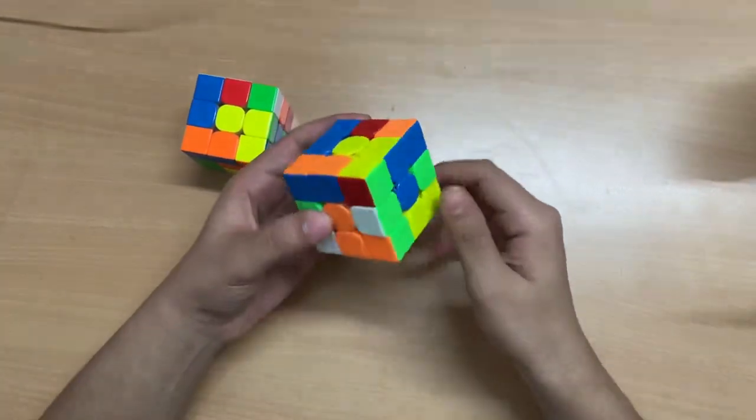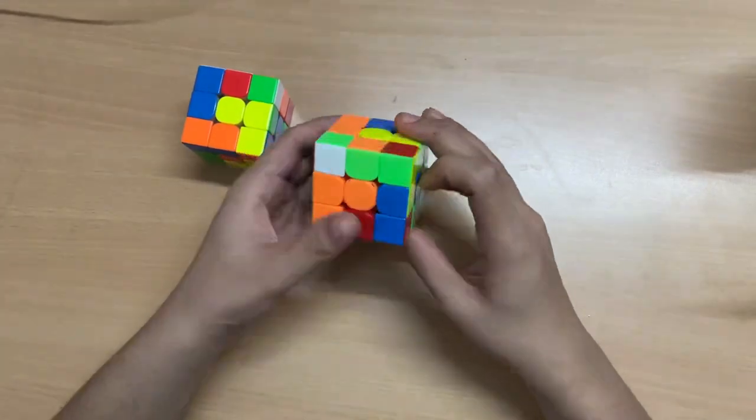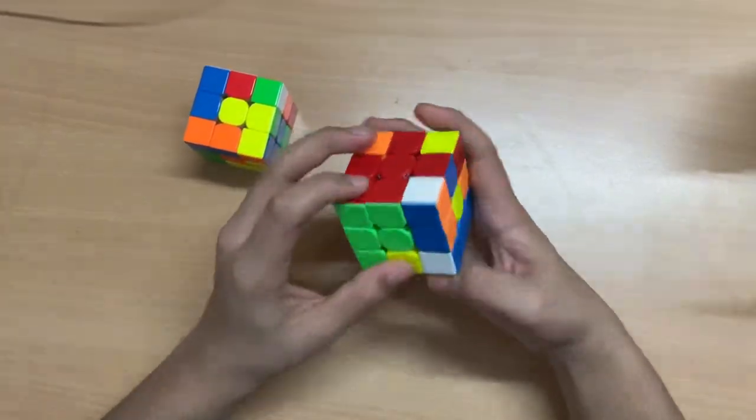So my cross solution was R, D, U, R', F and then I inserted this corner right here, which makes this X-cross in the back.